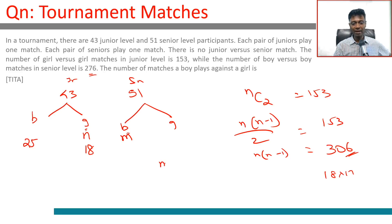And let's go here. m boy versus boy matches in senior level. m C 2 is 276. m into m minus 1 by 2 is 276. m into m minus 1 is 276 into 2, which is 552.